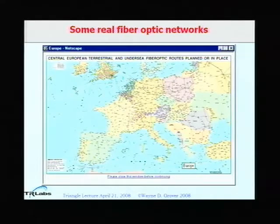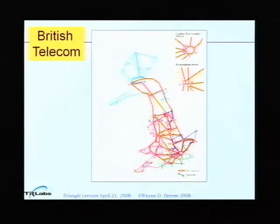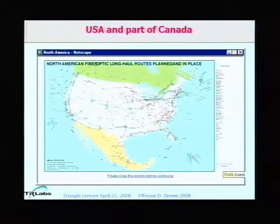Here are some network maps — I always find networks and maps fascinating. This is the fiber optic root structure in European countries: not point-to-point demand patterns, but the actual routes in the ground where cables are buried, trenched, ducted, or overhead on poles. This is the corresponding physical infrastructure in British Telecom's network.